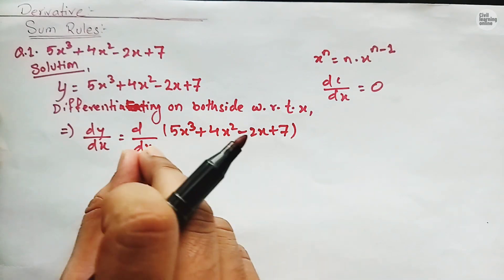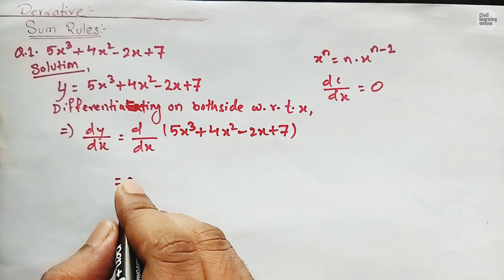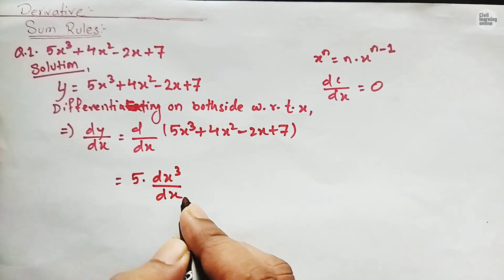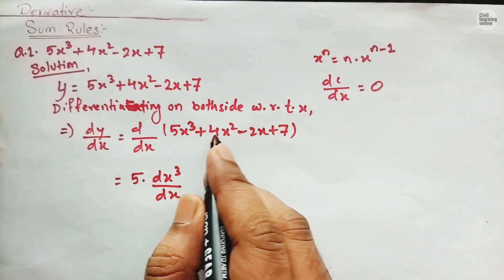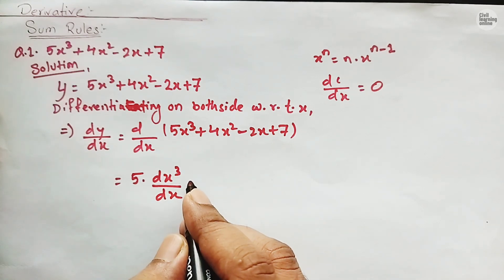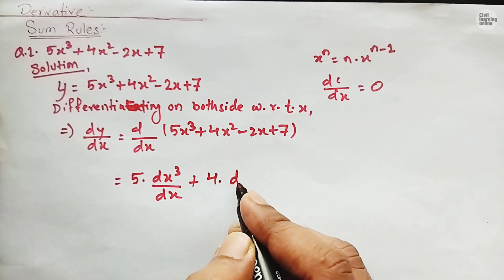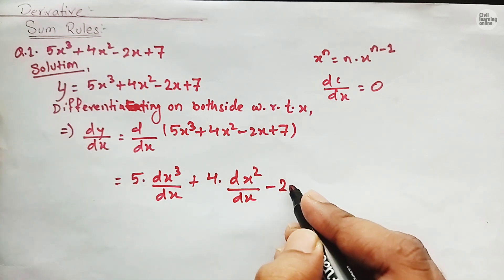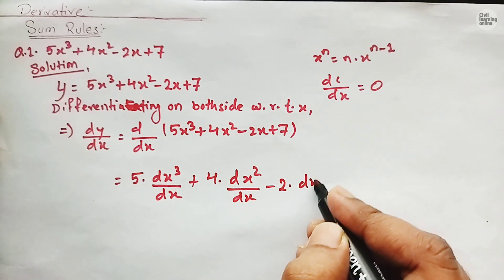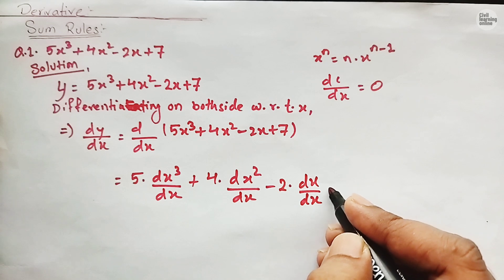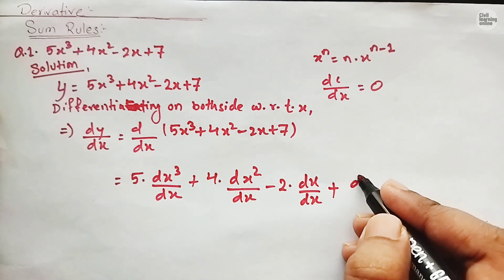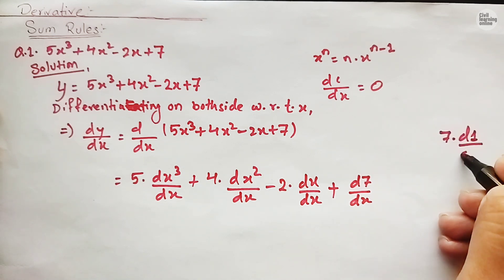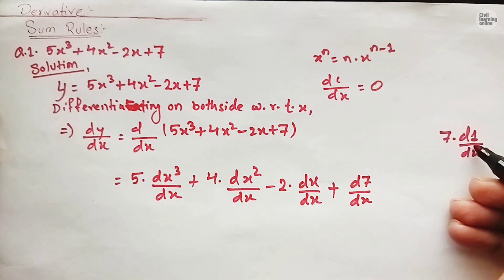As we are applying the sum rule, we will multiply each and every term with d upon dx. So we write 5 times d(x cubed) upon dx, plus 4 times d(x squared) upon dx, minus 2 times dx upon dx, plus d(7) upon dx. You can write it as d7 upon dx, or 7 times d(1) upon dx, because the derivative of a constant is 0.